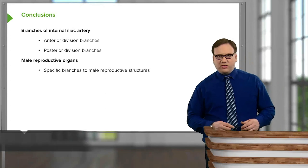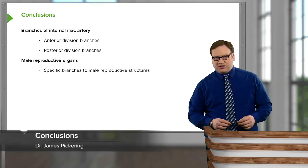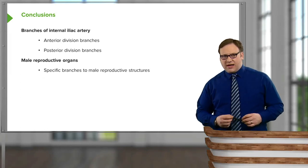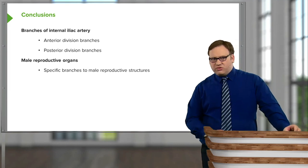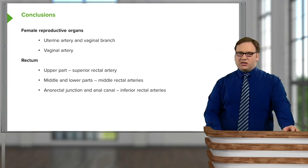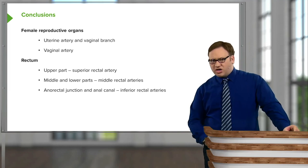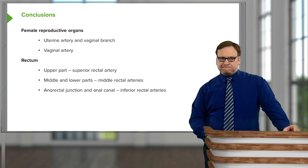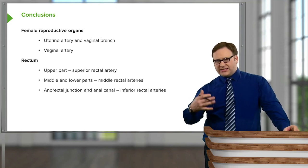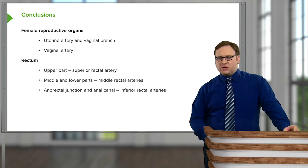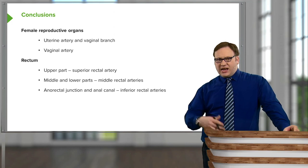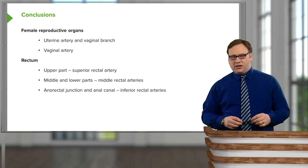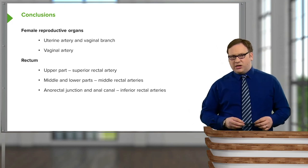In this lecture we've looked at the anterior and posterior divisions of the internal iliac and their parietal and visceral branches. We've looked at specific branches to the male reproductive structures and to the female reproductive structures, like the uterine artery and its vaginal branch, and the vaginal artery that supplies the uterus and vagina. We finished by looking at the rectum's diverse blood supply to its upper, middle and lower parts, leading on to a future lecture on the inferior rectal arteries from the internal pudendal, which we'll encounter again when we look at the perineum.